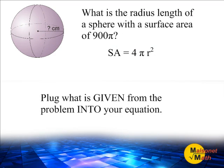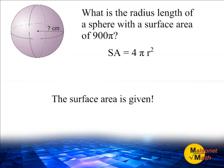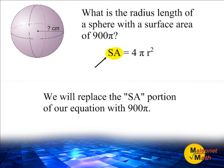Now that we have stated our equation we are going to plug what is given from the problem into our equation. In this problem the only information that is given is that the surface area is equal to 900π. Therefore we are going to take the SA portion of our equation and substitute that with 900π. So we know that 900π is equal to 4π times radius to the second power.